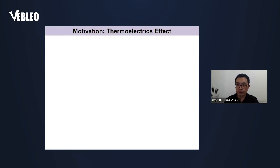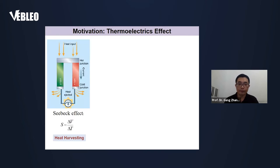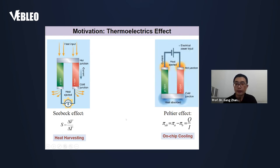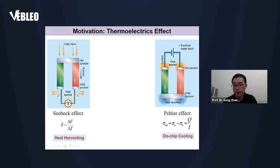Actually, we can use the thermoelectric effect to address the thermal problem. In thermoelectric effects, the first one is the Seebeck effect: if there is a heat input through a semiconductor junction, it can generate an electric voltage. So we can use the Seebeck effect for heat energy harvesting. The second thermoelectric effect is the Peltier effect: if an electrical current flows through a semiconductor junction, it can absorb heat from one side and transfer it to the other side. So using the Peltier effect, we can use it for on-chip cooling in IC thermal management.